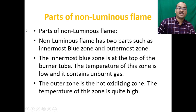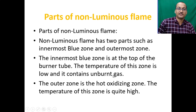The non-luminous flame has two parts: the innermost blue zone and the outermost zone. The innermost blue zone is at the top of the burner tube, and its temperature is low — it contains unburnt gas. The outer zone is the hot oxidizing zone, and the temperature of this zone is quite high.